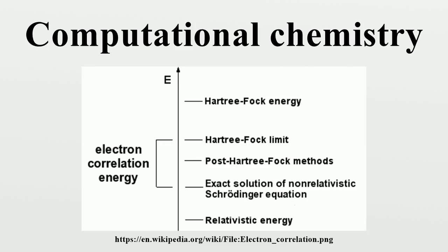Present algorithms in computational chemistry can routinely calculate the properties of molecules that contain up to about 40 electrons with sufficient accuracy. Errors for energies can be less than a few kilojoules per mole. For geometries, bond lengths can be predicted within a few picometers and bond angles within 0.5 degrees. The treatment of larger molecules that contain a few dozen electrons is computationally tractable by approximate methods such as density functional theory. There is some dispute within the field whether or not the latter methods are sufficient to describe complex chemical reactions, such as those in biochemistry. Large molecules can be studied by semi-empirical approximate methods. Even larger molecules are treated by classical mechanics methods that employ what are called molecular mechanics.